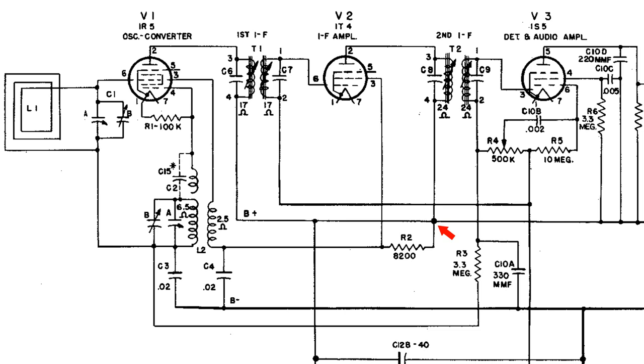So let's put the dot in on this. And now we can see that the B plus is supposed to go through R2 and supply that 68 volts to pin 3 of V1 and V2.